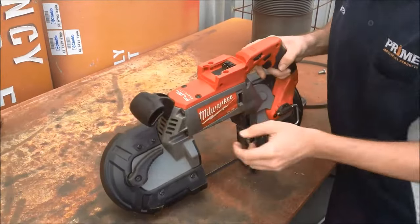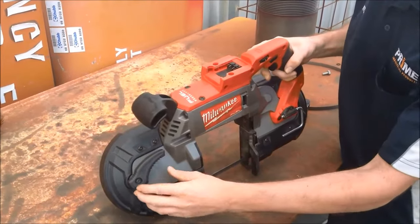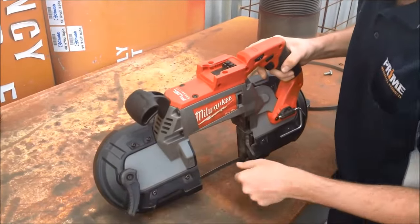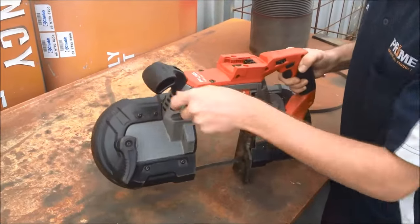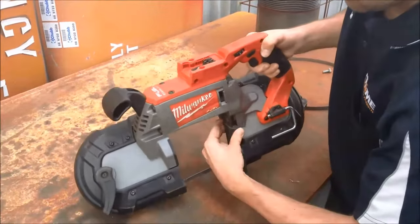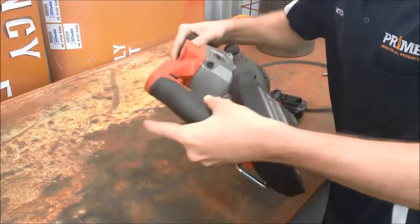Turn the unit around. Here we've got our tension switch. Undo the tension switch, retract the foot, and swing the unit around.